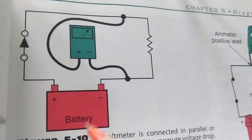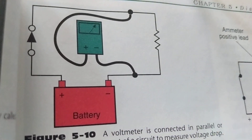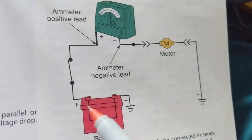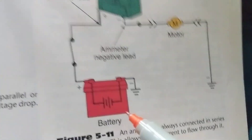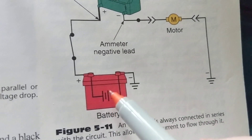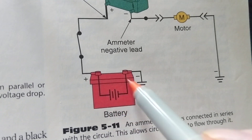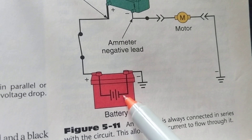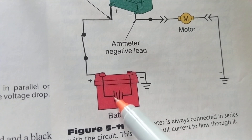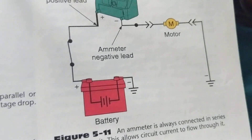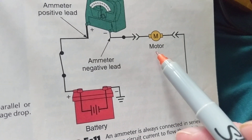Now a different scenario — same idea but we have a switch. We're missing a fuse here but that's okay. You can see the battery symbol: the longer line is the positive terminal, the shorter one is the negative or ground terminal. This battery symbol represents cells — one cell, two cells. Here we have a motor, which could be a fuel pump, a power window motor, or a door motor.